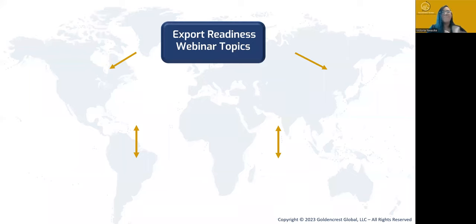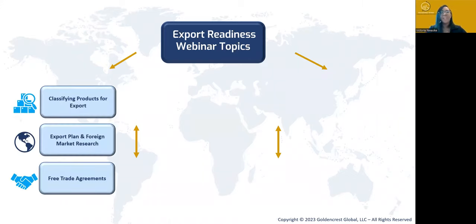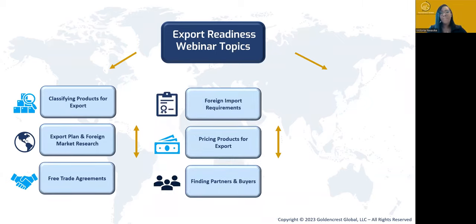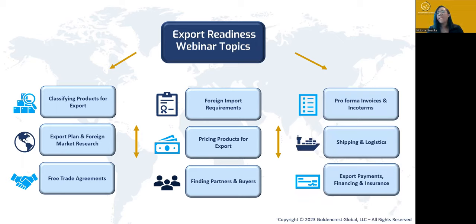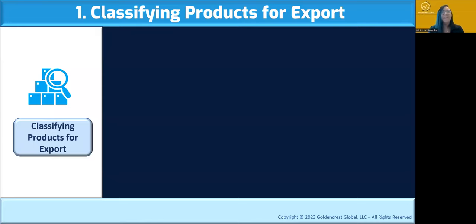Today's webinar covers nine topics. We're going to talk about: classifying your products for export; your export plan and foreign market research; free trade agreements; foreign import requirements; pricing products for export; finding partners and buyers; pro forma invoices and Incoterms; shipping and logistics; and export payment, financing, and insurance. We won't cover insurance in much depth given the time, but we'll hit on all these topics. You'll know 'what' the key fundamental things to think about when you're exporting.